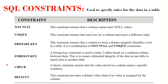The most common constraints used in SQL are the NOT NULL, UNIQUE, PRIMARY KEY, FOREIGN KEY, CHECK, and DEFAULT constraints. All of these constraints can be specified at the time of table creation or after a table has been created using the ALTER TABLE statement.